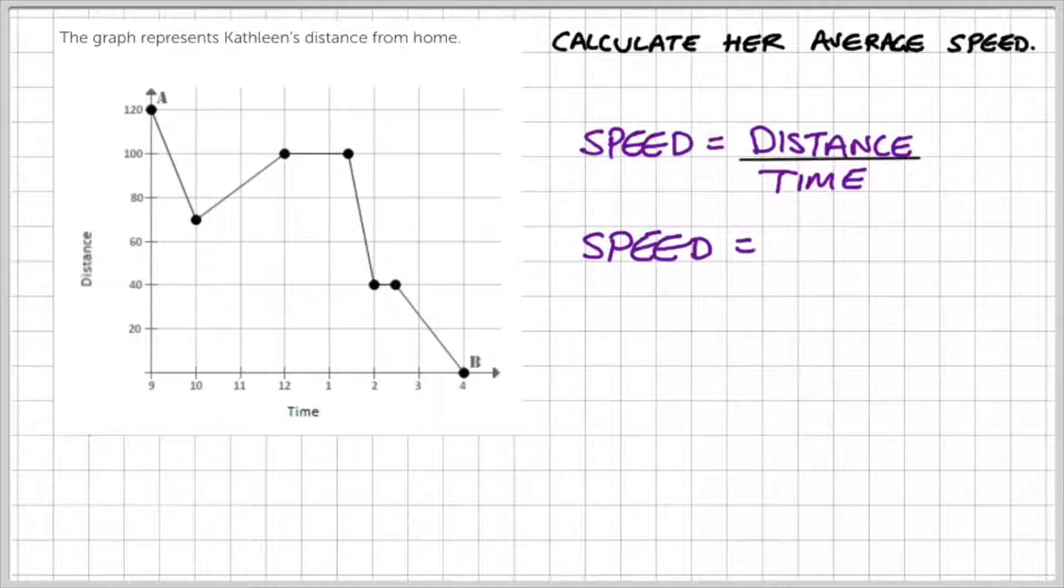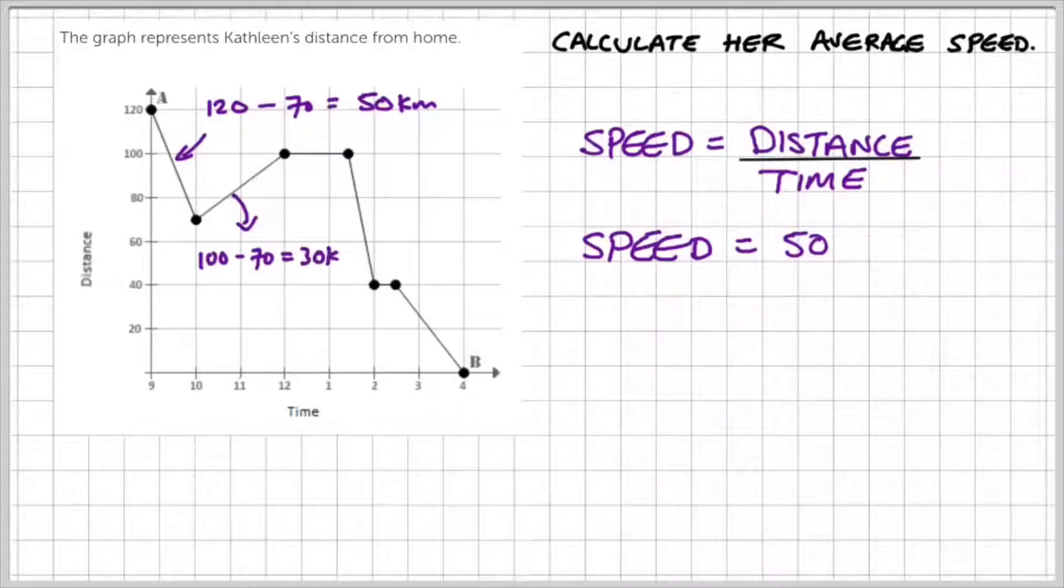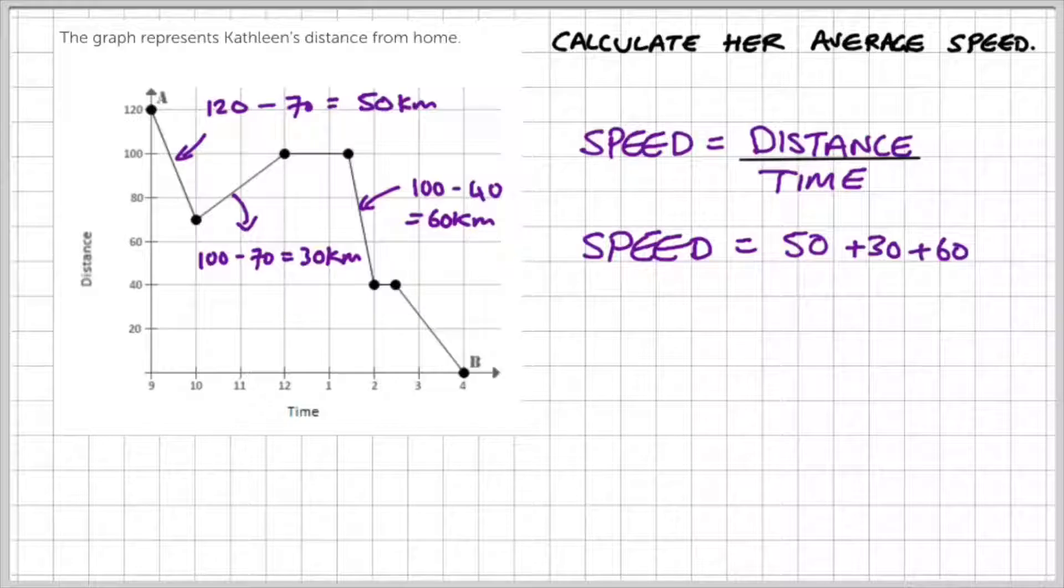So if we add up all of the distances, we've got this leg that represents 50 kilometres. The next leg represents 30 kilometres. Then we have a stationary point, which means she's not moving anywhere. The next leg represents a movement of 60 kilometres. And the final leg represents a movement of 40 kilometres. So we need to add all of those together.